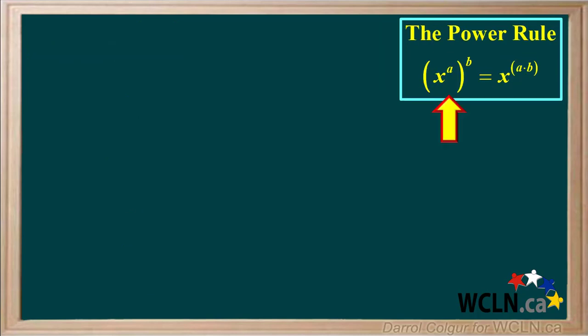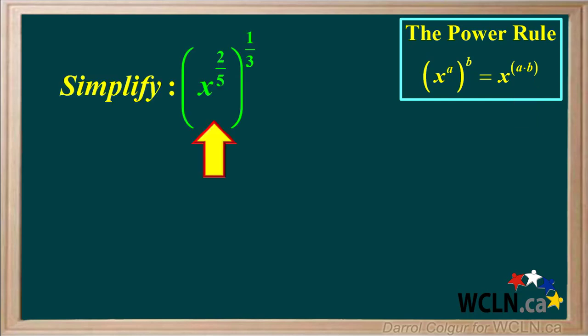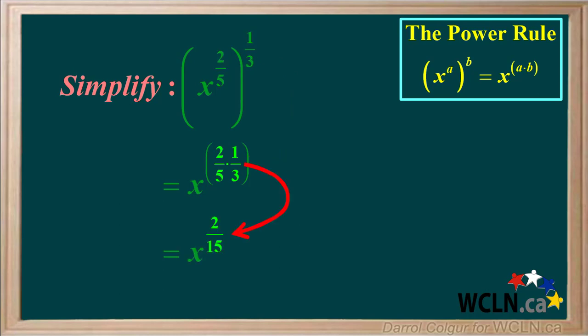The next rule is the power rule. It states that x to the power of a raised to a power of b gives x to the power of a times b. In other words, we multiply the exponent inside the bracket by the exponent outside the bracket. We are asked to simplify x to the 2 fifths raised to the power of 1 third. Applying the power rule, we multiply the exponent inside the bracket by the exponent outside, so we have x to the power of 2 fifths times 1 third. 2 fifths times 1 third equals 2 fifteenths, so the final answer is x to the power of 2 fifteenths.